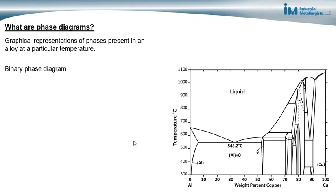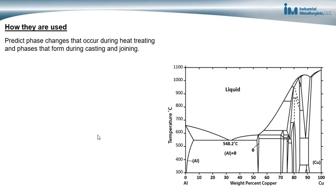The diagrams I'll be presenting are called binary phase diagrams — they are for two elements, so I'm adding one element to another element. Phase diagrams are used to predict the phase changes that occur during heat treating and also the phases that form during metal casting, joining, and other processes where the metal is going from molten to solid.